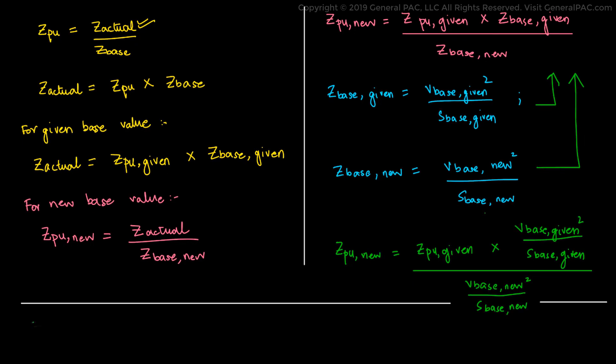Putting this equation to find Z per unit new, what we get is Z per unit new equals Z per unit given multiplied by V base given squared divided by S base given, the whole thing divided by V base new squared over S base new. Rearranging the above equation, we get Z per unit new equals Z per unit given times V base given squared divided by V base new squared times S base new over S base given.